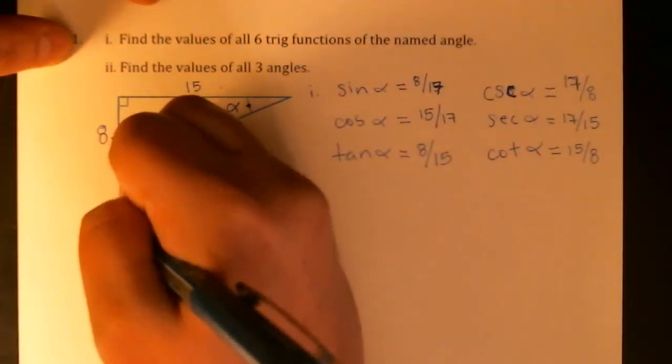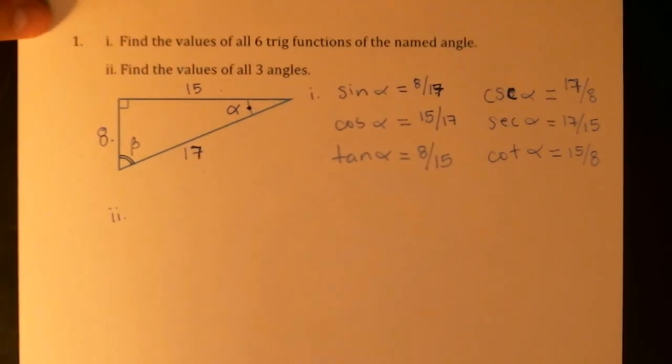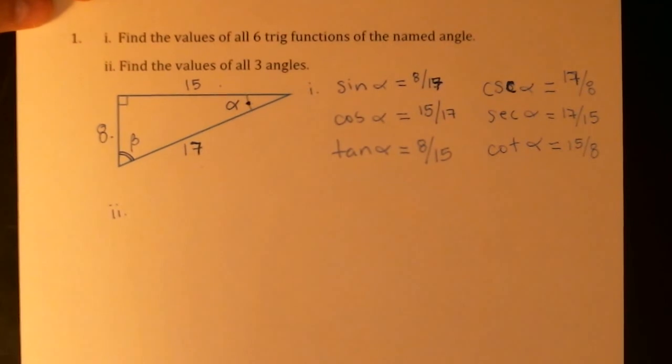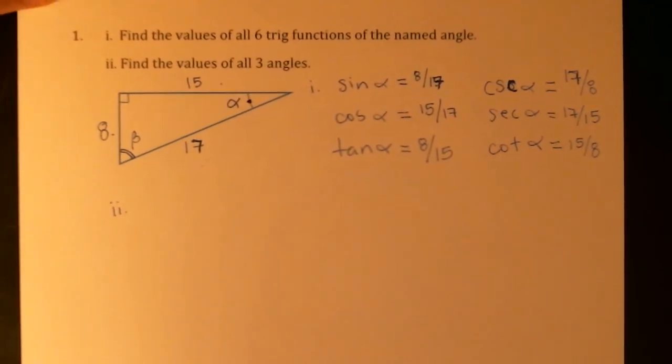Part two asks to find the values of all the angles. So we already have to have all three sides to do part one, but we can do part one without knowing any angles. So now we're supposed to do that. And this will be approximate. I don't have special values here.